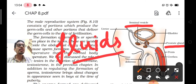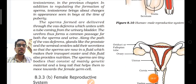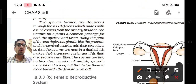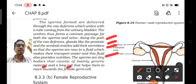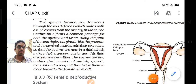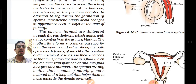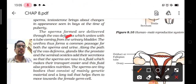When sperms move through the vas deferens, the prostate gland and seminal vesicles release their secretions — fluids which give nutrition to the sperms. Along the path of vas deferens, glands like the prostate and seminal vesicles add their secretions so that sperms have enough fluid to make their transport easier. Sperms are tiny bodies consisting mainly of genetic material and a long tail that helps them move towards the female germ cells.